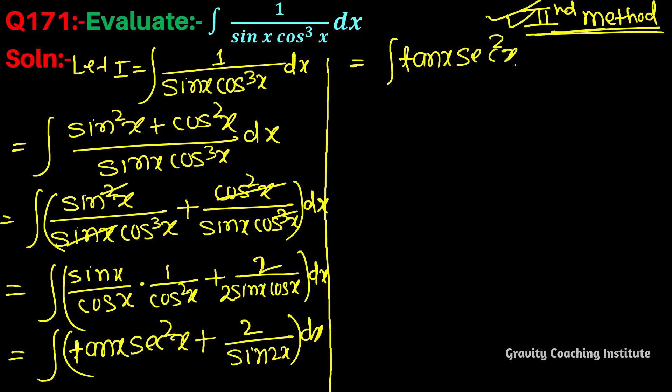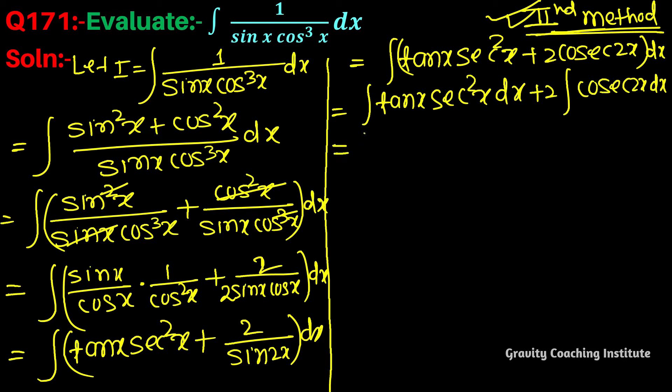Equal to integration tan x into sec square x plus 2 cosec 2x dx. Equal to integration tan x into sec square x dx plus 2 into cosec 2x dx. The cosec 2x integration is log tan x by 2, so this is log tan x plus c.